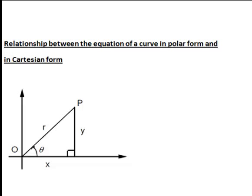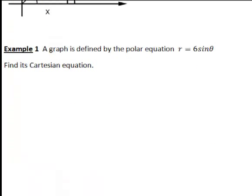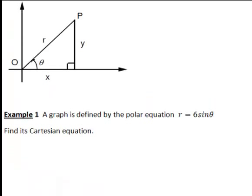First let's have a look at how we would go about converting from a polar equation into a Cartesian equation. So here we have the equation r equal to 6 sin theta. To rewrite it as a Cartesian equation, we want to rewrite that in terms of x and y. Let's look at how r can be expressed in terms of x and y. By Pythagoras, r is just the square root of x squared plus y squared.